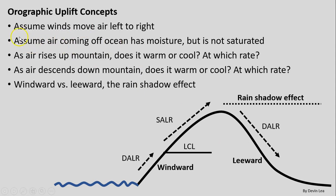Our air coming off the ocean has some amount of moisture with it, but it is not saturated. We've already talked about saturation and humidity concepts, because we're going to be building off those in this video. As the air rises up the mountain, we ask: does it warm or does it cool, and at what rate? I've introduced the adiabatic processes as well as saturated versus unsaturated different rates, and we'll give you specific values for those in this video.